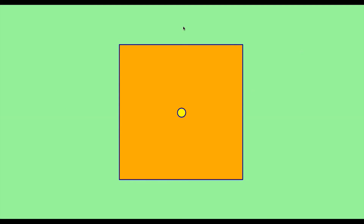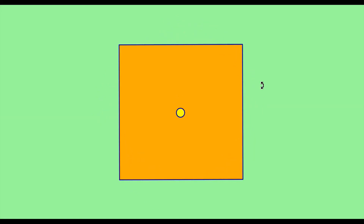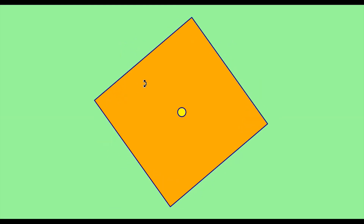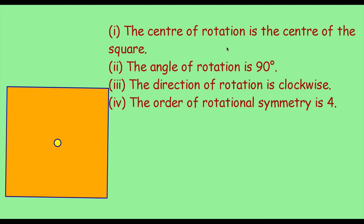Let me take a square. The center of rotation is the center of the square. After rotating 90 degrees it looks exactly the same, and for a full turn there are 4 times it looks the same. So the order of rotation is 4 for a square. We can conclude: the center of rotation is the center of the square, the angle of rotation is 90 degrees, the direction of rotation is clockwise, and the order of rotational symmetry is 4.